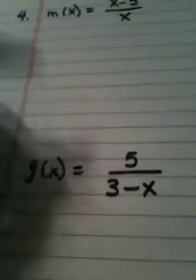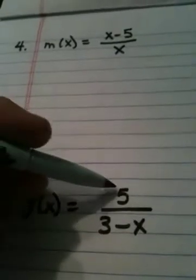You're given this function, m of x equals x minus 5 divided by x, and number 5, you're given the function g of x equals 5 over 3 minus x.